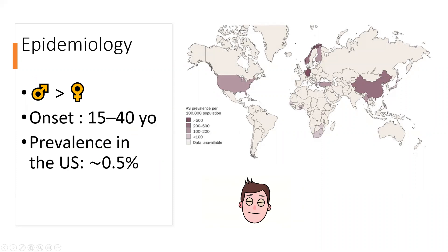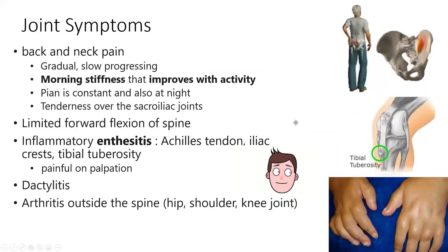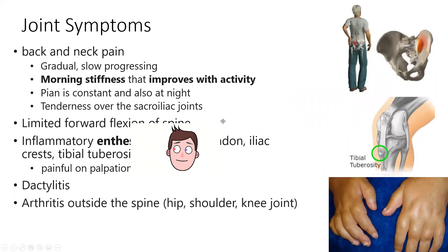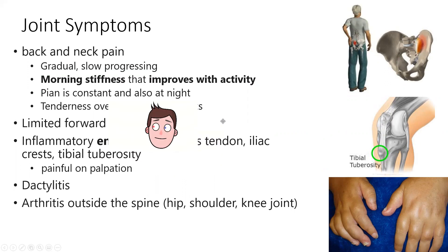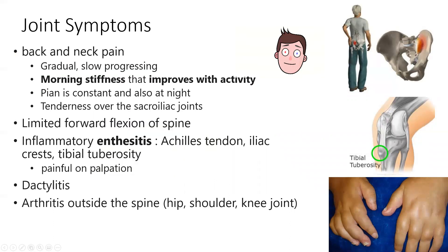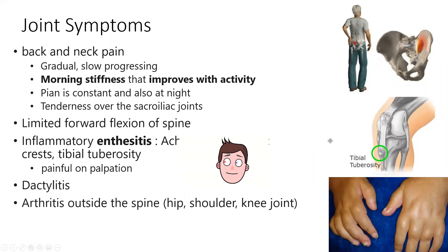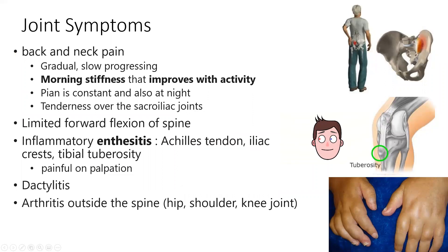Regarding joint symptoms in the back: morning stiffness that improves with activity is very classic. The pain can also be constant during the night, affecting sleep, and there's tenderness over the sacroiliac joint. There's limited forward flexion of the spine — if you try to bend over and touch your toes it will be affected. We'll discuss the Schober test, which demonstrates this.